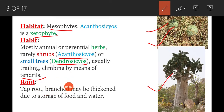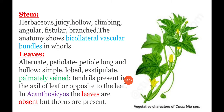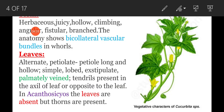Coming to the root system: generally, dicots have a tap root system. Cucurbitaceae members are dicots, so they have a tap root system, and that tap root is branched.